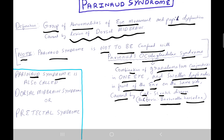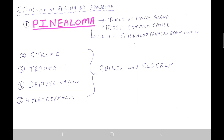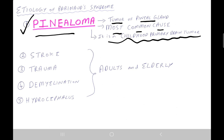Parinaud syndrome is also called dorsal midbrain syndrome or pretectal syndrome. The etiology: number one, and most important, is pinealoma — a tumor of the pineal gland. It is the most common cause and is a childhood primary brain tumor.